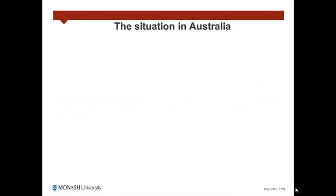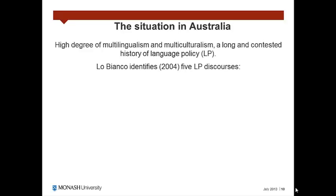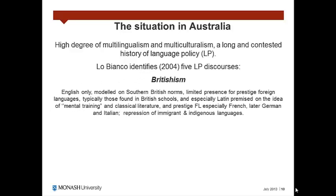Australia is a country characterized by a high degree of multilingualism and multiculturalism with a long and contested history of language policy. In this context, Lobianco identifies five language policy discourses. The first one is Britishism, which promotes English only and is modeled on southern British norms. A limited presence is possible for prestige foreign languages, typically those found in British schools, and especially Latin premised on the idea of mental training and classical literature, as well as French, later German, and Italian. This discourse is also based on the repression of immigrant and indigenous languages.